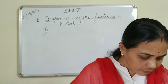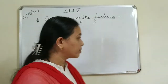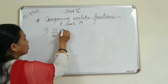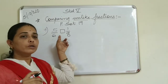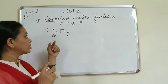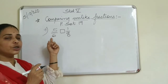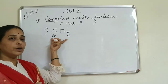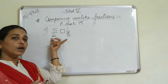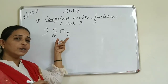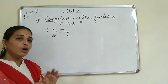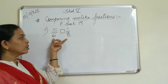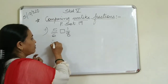From problem set 19, sum number 9: compare 5 upon 6 and 1 upon 8 - there is a box in between and you have to show which fraction is bigger. In the six table and eight table, find the common multiple. Six fours are twenty-four and eight threes are twenty-four. You can take this LCM approach, or if there is confusion you can multiply them with each other.